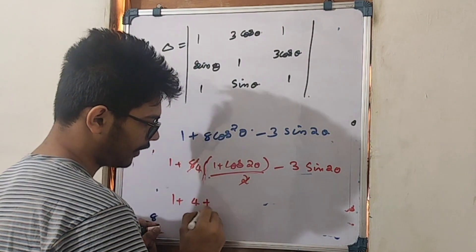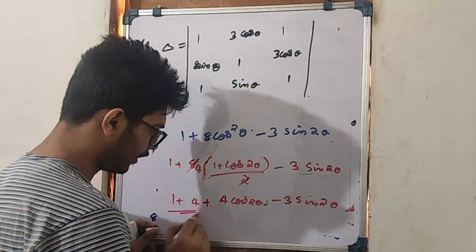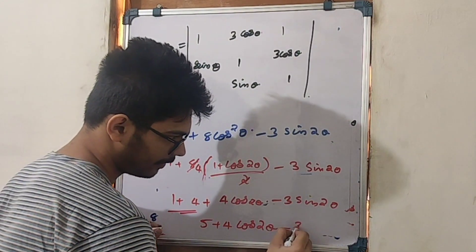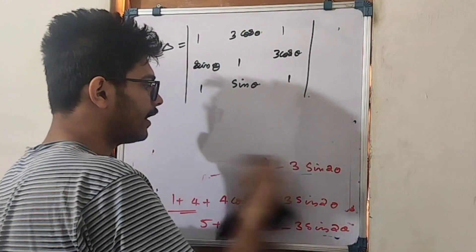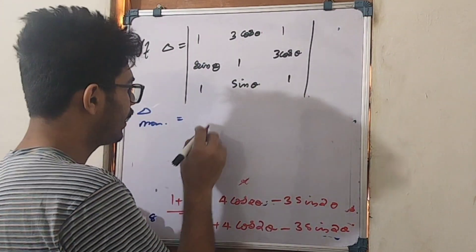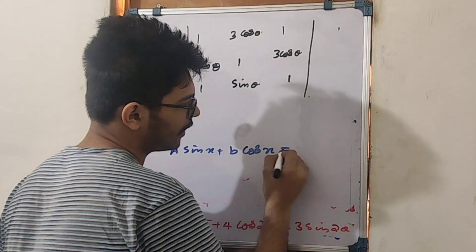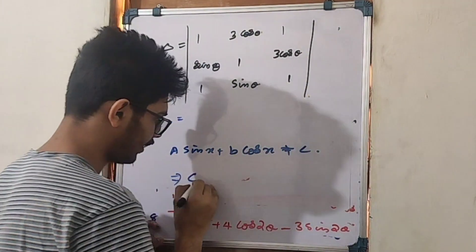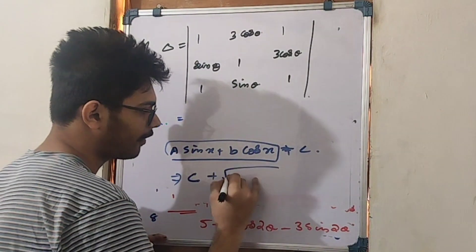So the expression becomes 1 + 4cos²θ + 4cosθ. Using 1 + cos2θ = 2cos²θ, this simplifies to 5 + 4cos2θ − 3sin2θ. For a·sinx + b·cosx + c, the maximum value is c plus root of (a² + b²).